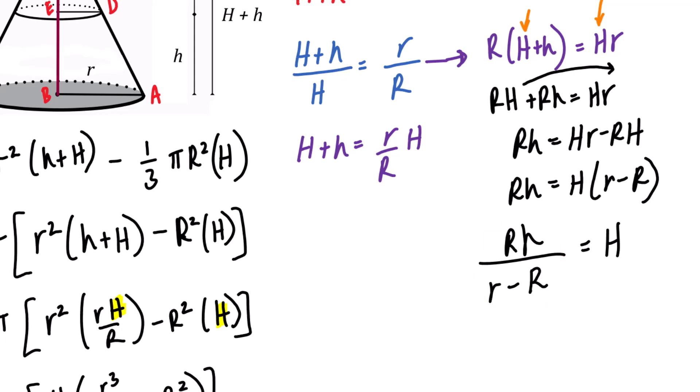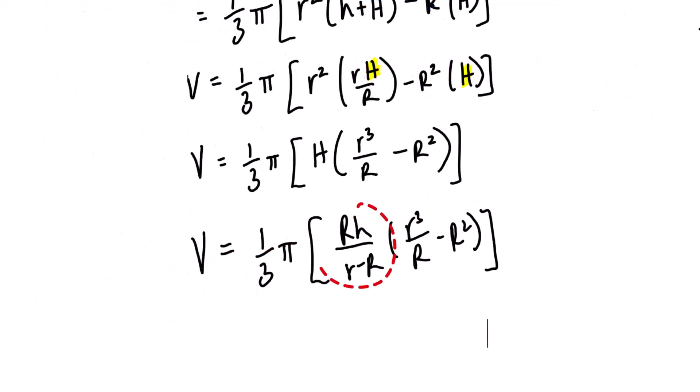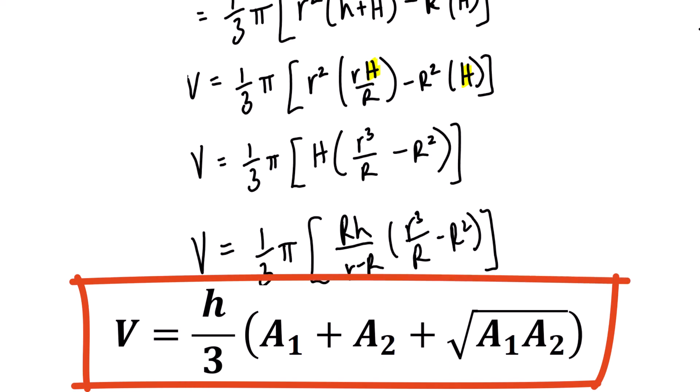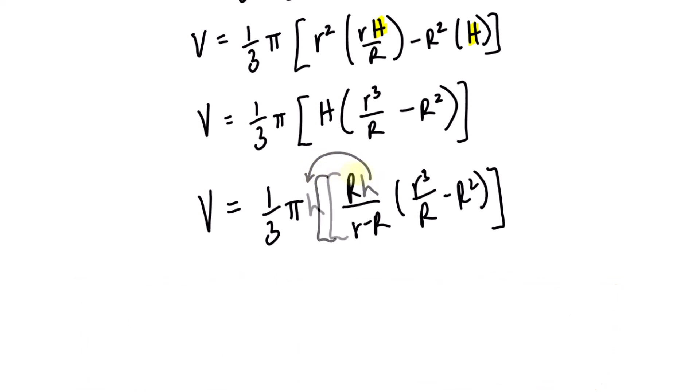We're now ready to substitute this expression back into our equation. Here's what it looks like if you do it correctly. Notice how our equation no longer has capital H. And it is from here where we can start to piece together how this becomes the one that you see on your screen. To model the equation I'm trying to derive, I'll pull out this h so that it exists outside of the brackets. Furthermore, I'll multiply this capital R into the parentheses.